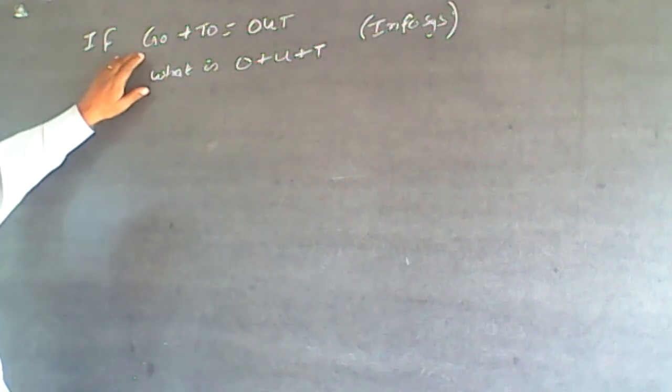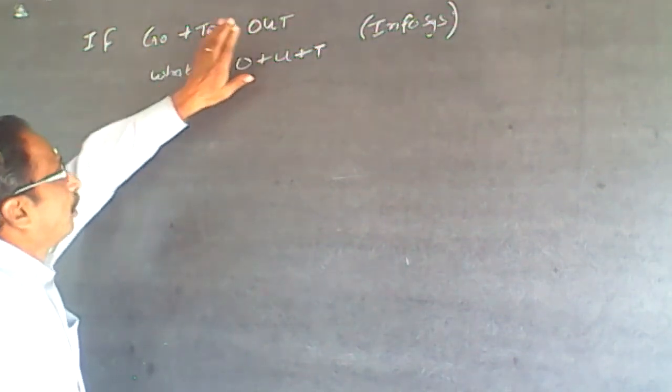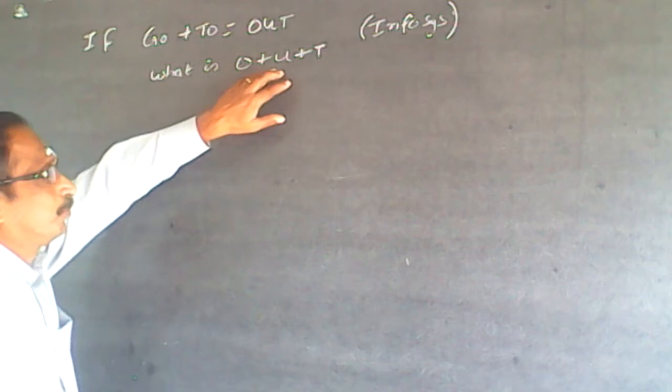The question is, if GO plus TO is equal to OUT, what is O plus U plus T?